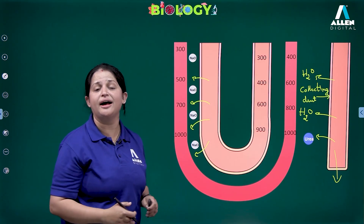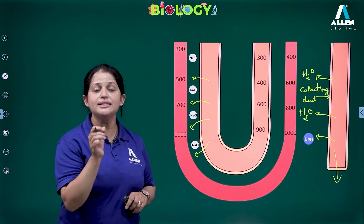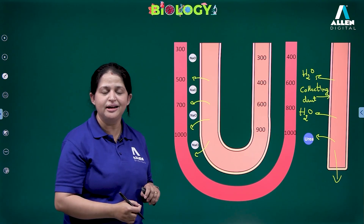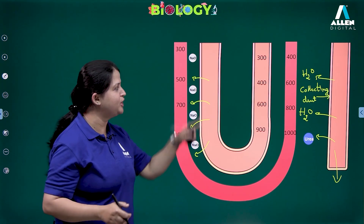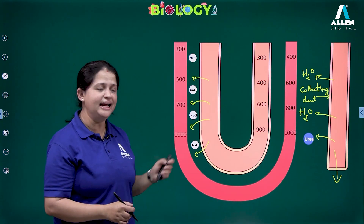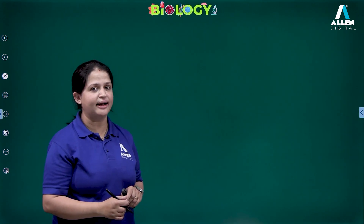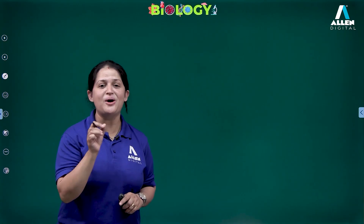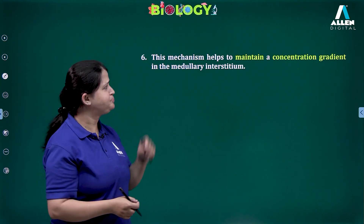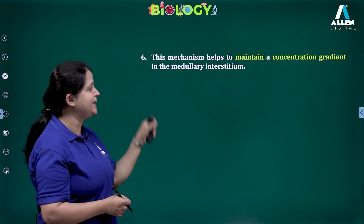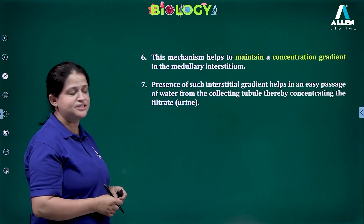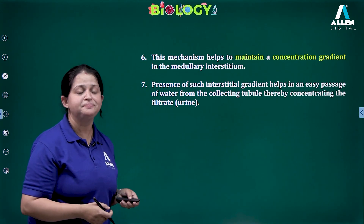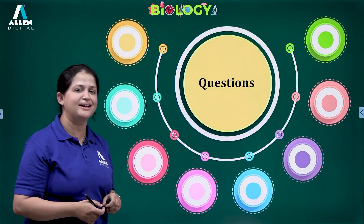This is the entire counter current mechanism to form concentrated urine — the main aim of this particular mechanism. To form concentrated urine, water molecules are reabsorbed; to reabsorb water molecules, high osmolarity is maintained within the medullary interstitium. This mechanism helps in maintaining the concentration gradient in the medullary interstitium, and the presence of such an interstitial gradient helps in the reabsorption of water molecules from the collecting duct, resulting in concentrated urine.